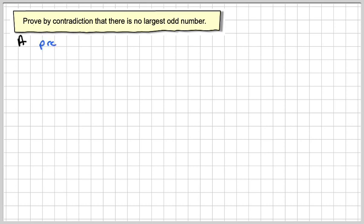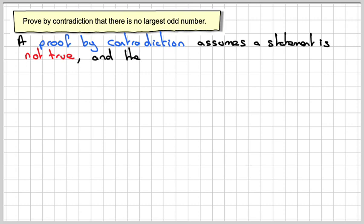Proof by contradiction is quite a tricky thing for A-level. A proof by contradiction assumes that the statement is not true, and then proves that this will lead to a contradiction or can't be the case.